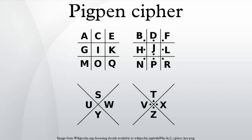One commonly used method orders the symbols as shown in the above image: grid, grid, x, x.